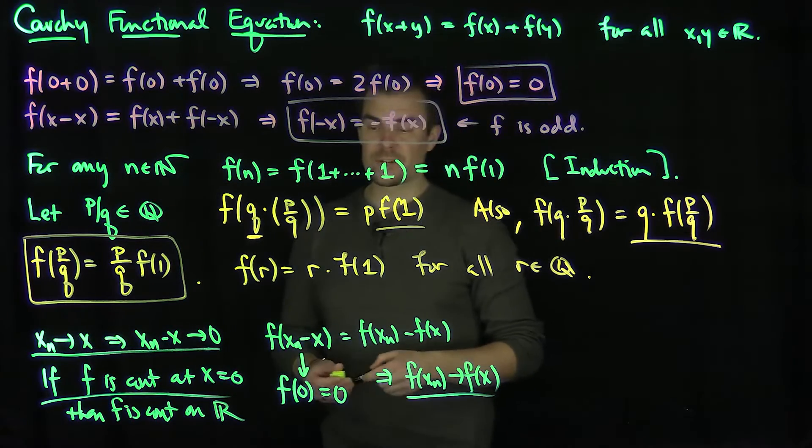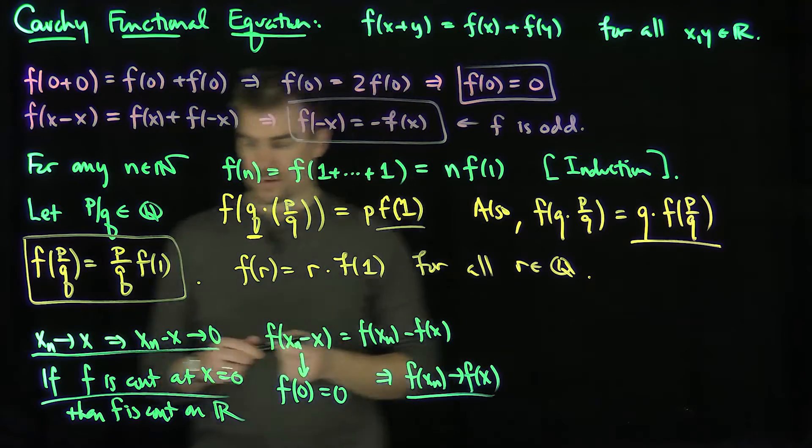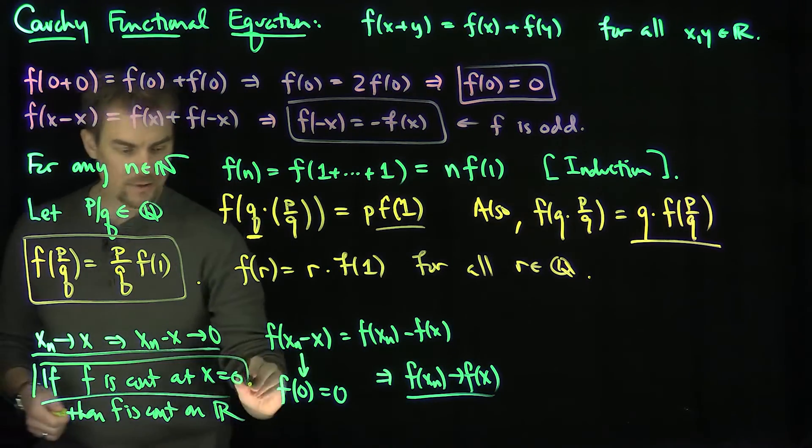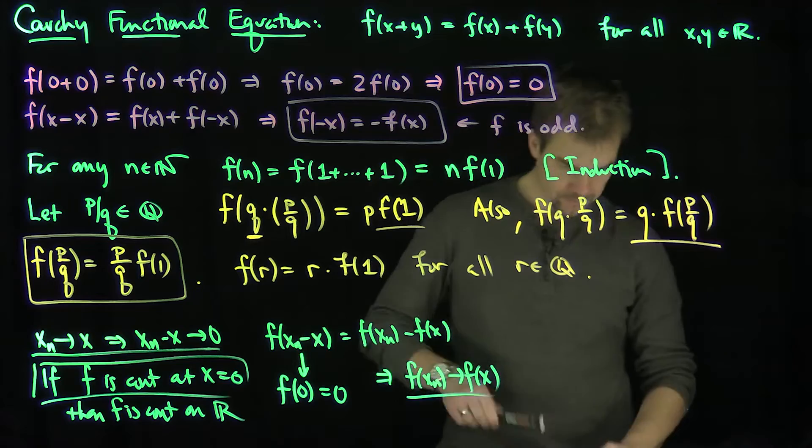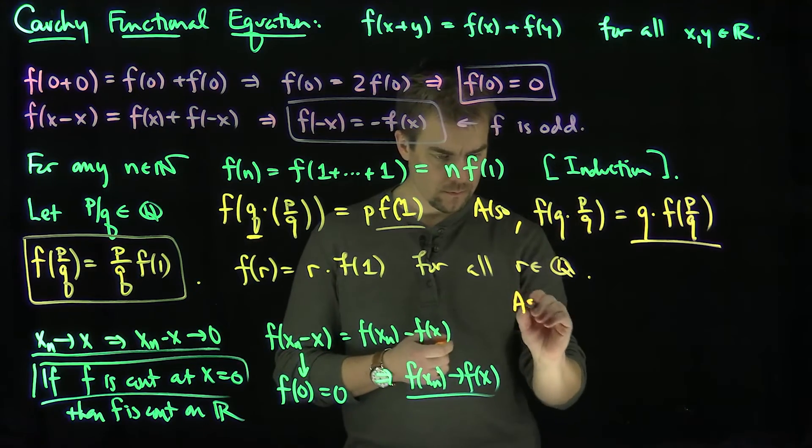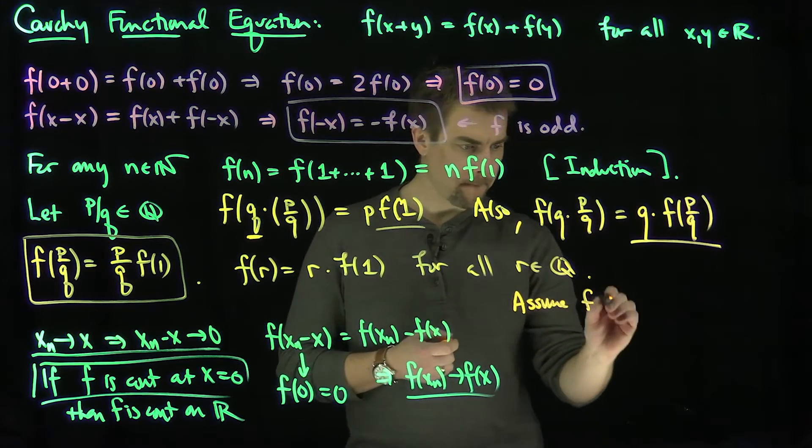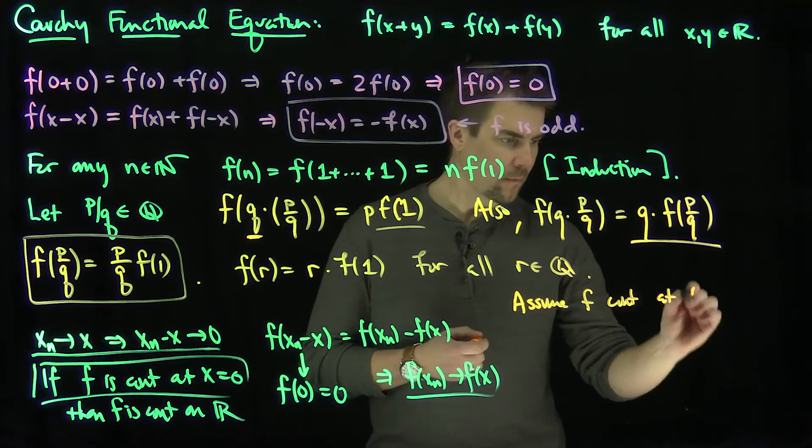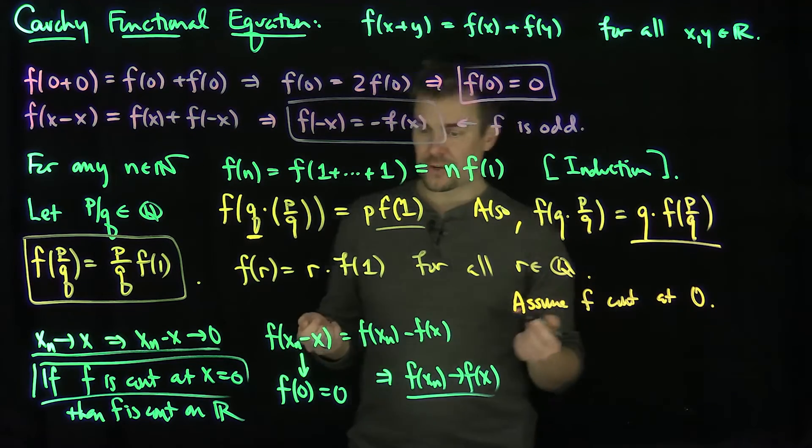And so now that's great because if f is continuous at zero—so if we assume that f is continuous at zero, let's make this assumption now. Let's assume f is continuous at zero. That means it's continuous everywhere.